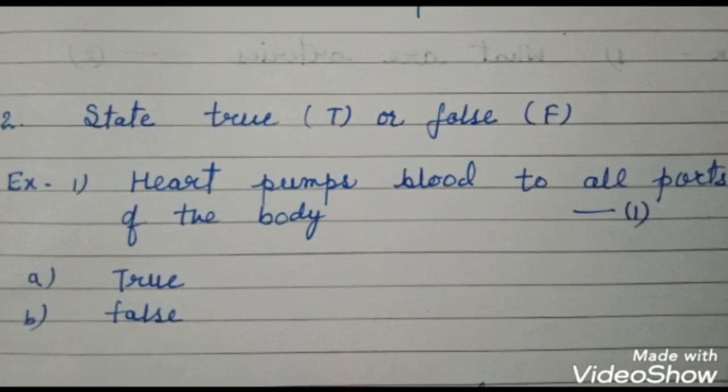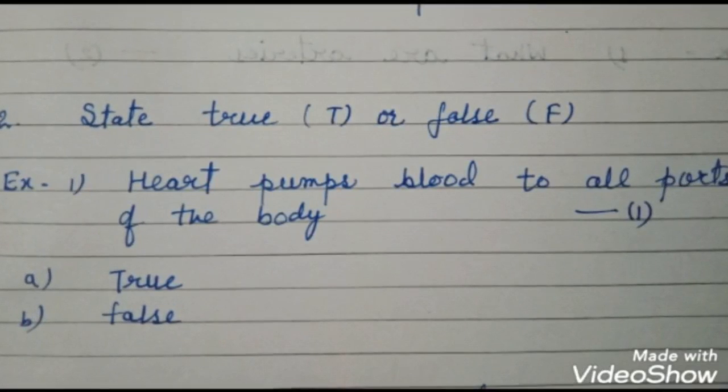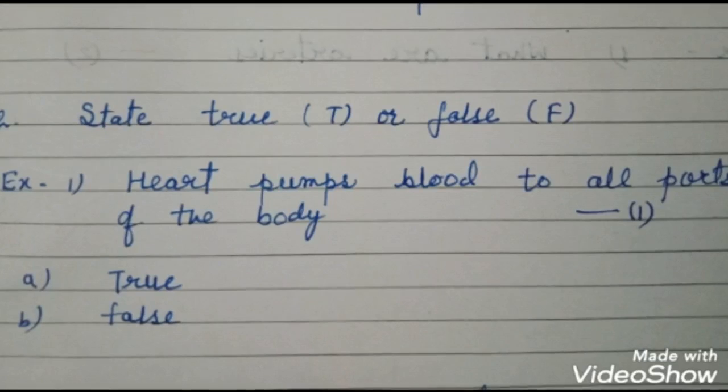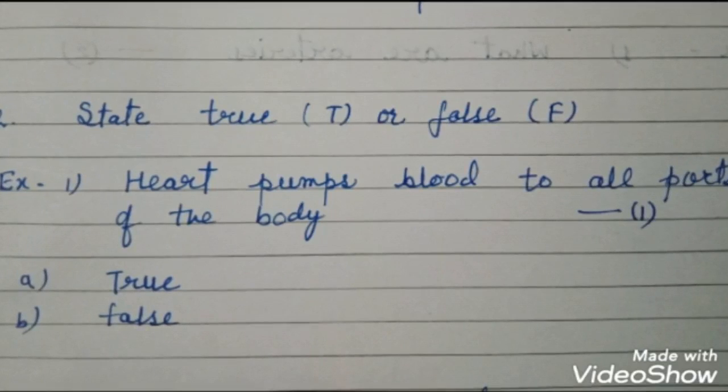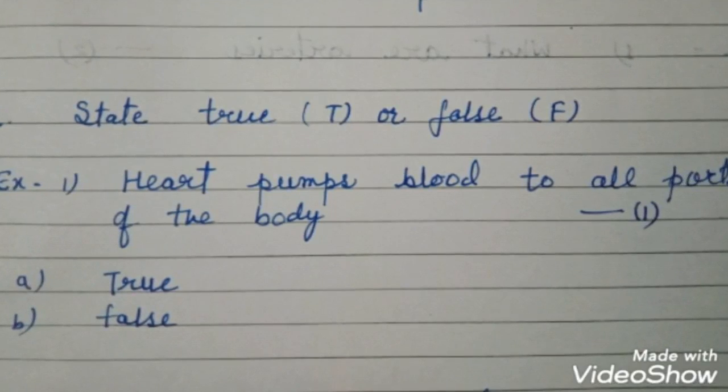Next, questions from 4 to 6 are true and false. So each question has allotted one mark. For example, heart pumps blood to all parts of the body. Here you will get two options, true and false. So you have to select either the answer is true or false.